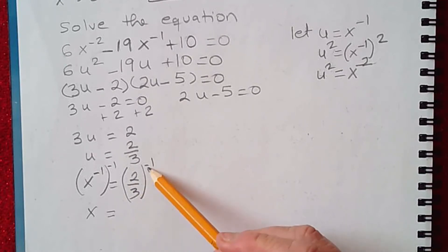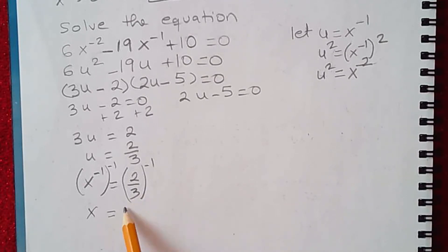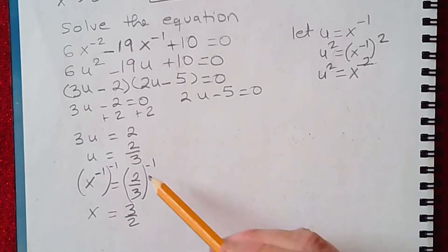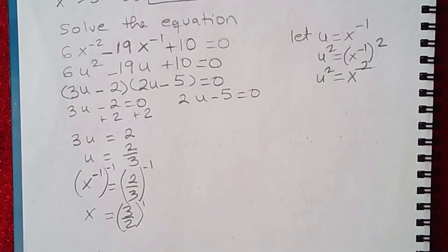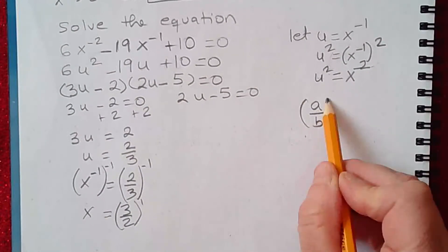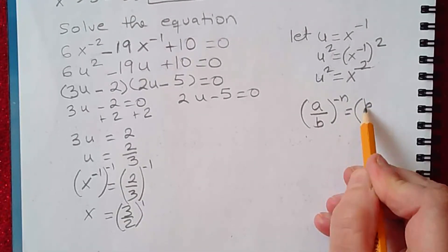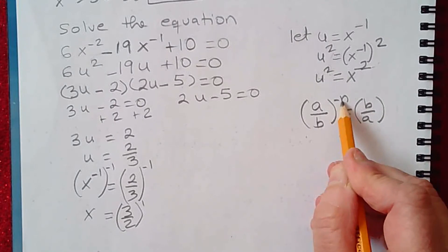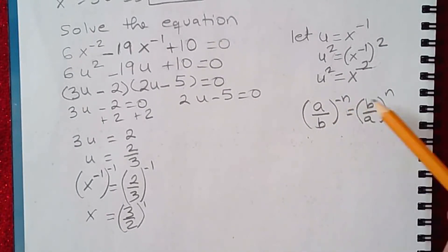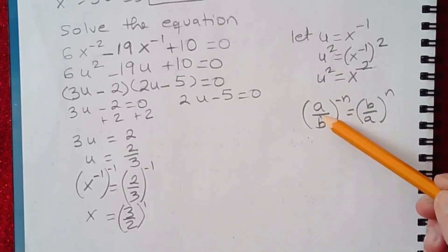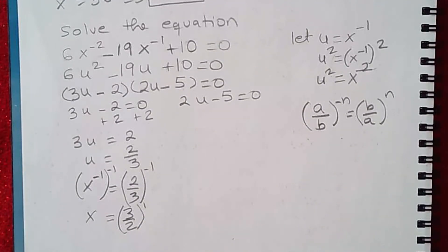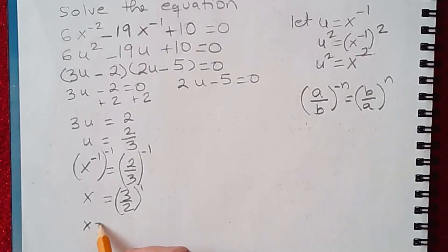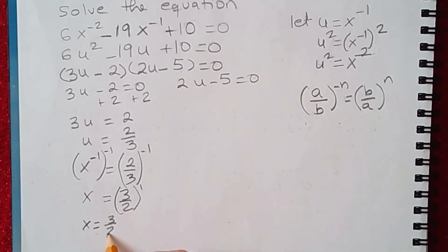That gives me x to the negative 1 times negative 1 is positive 1, or you can just leave it as x equals. Now 2/3 to the negative 1, you can simplify it. This becomes 3 over 2. You can flip this and turn this into a positive 1. This is one of the rules in the exponent. If you have a/b to the negative n, then that gives you b/a to the positive n. So you can turn the negative exponent to positive exponent. All you had to do is flip these two sides. This is the way you get the solution. So one solution is x equals 3/2.